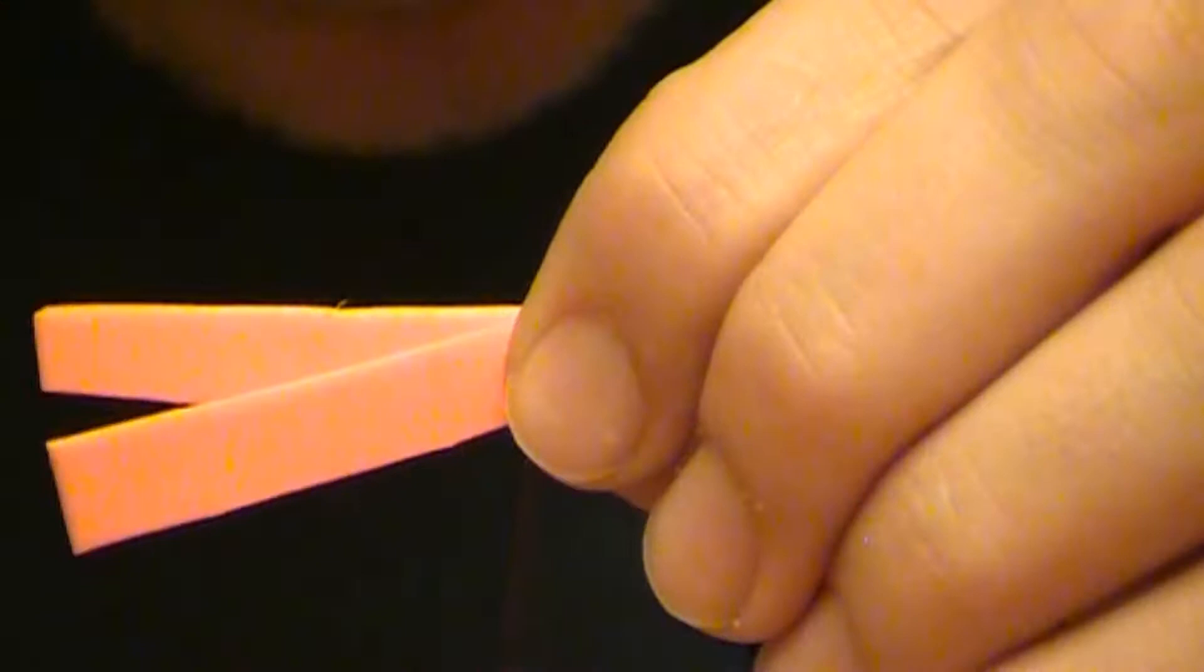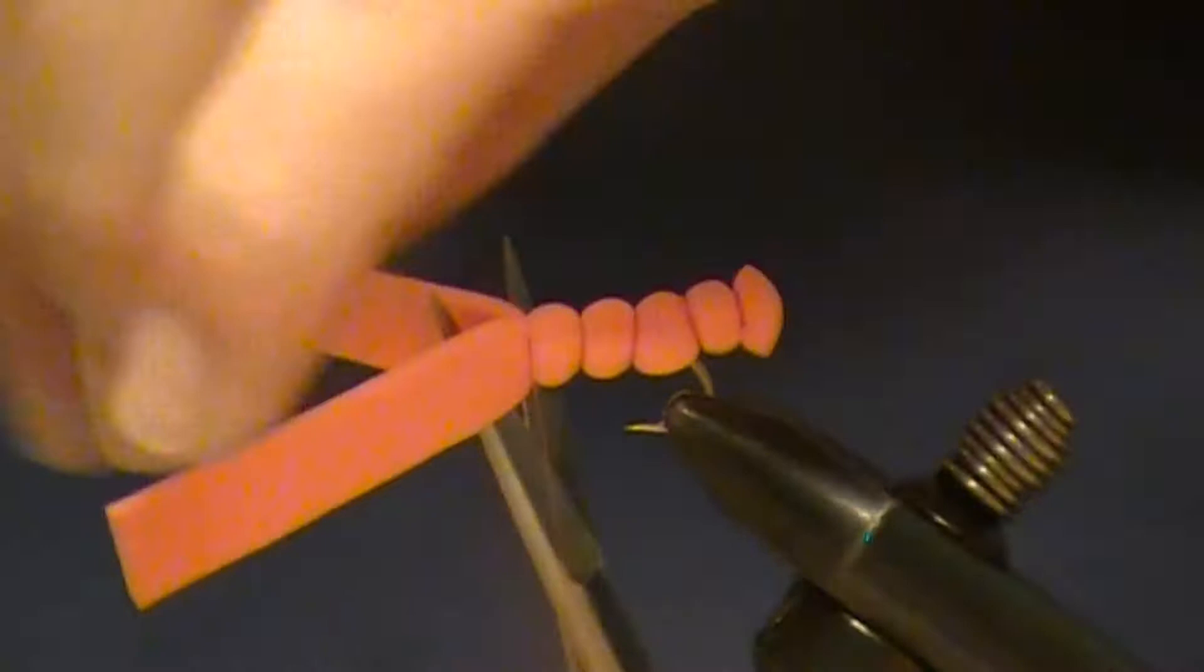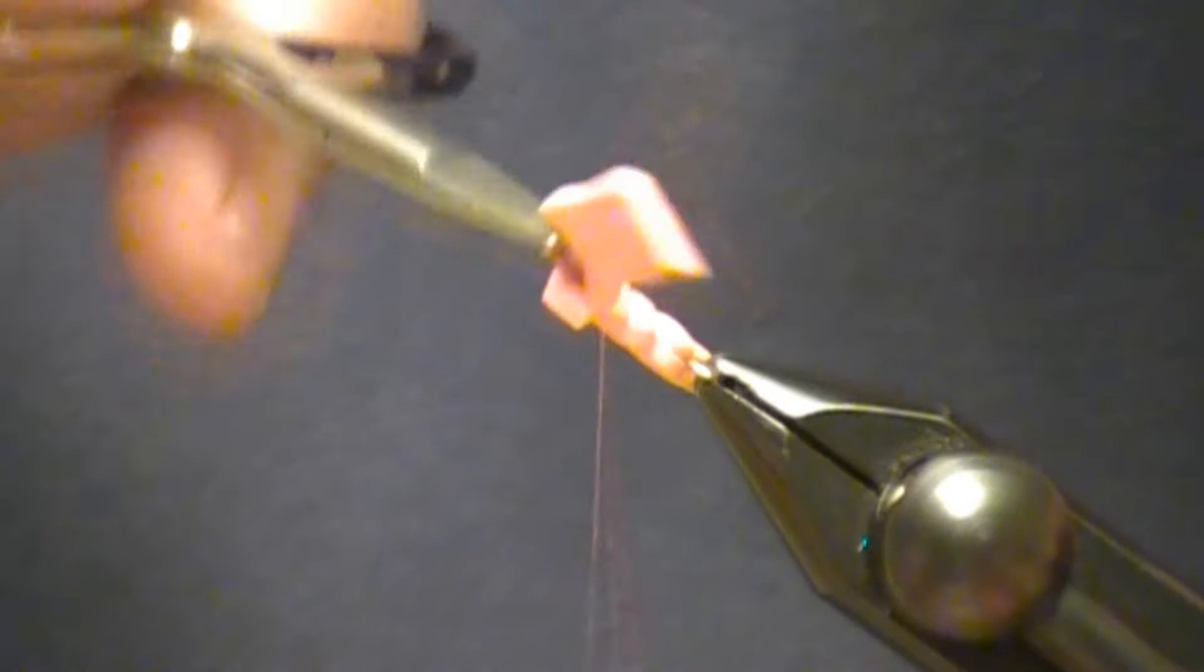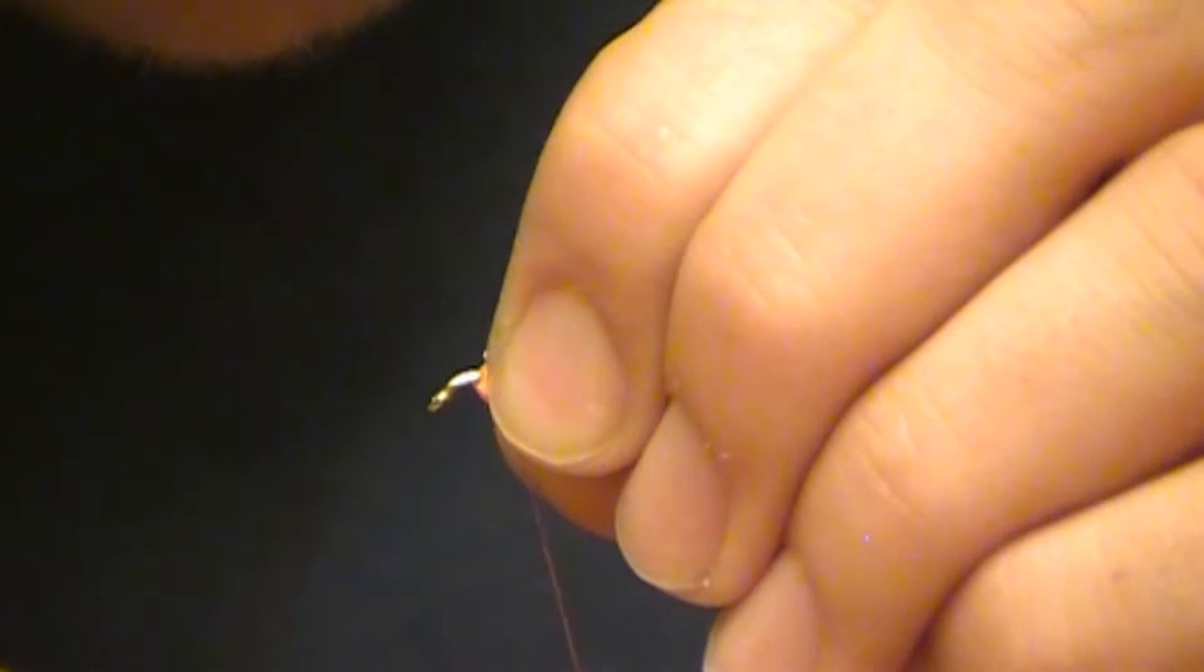Okay, I'm just going to do one more. Now when I cut my foam I'm going to cut it at a point, and that will give me a good base to tie off this foam. By cutting it at a point I make sure that I tie in the tips just as secure as the butt.